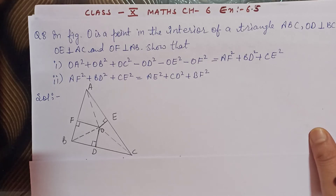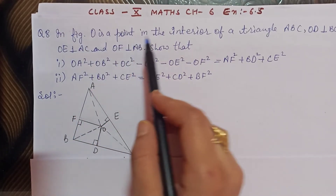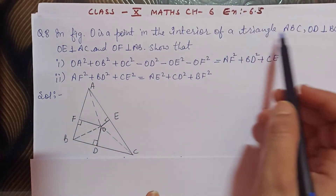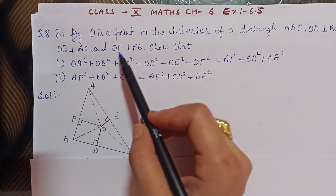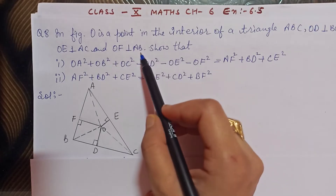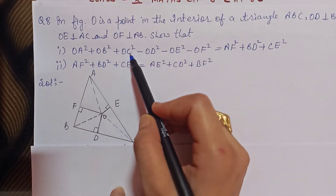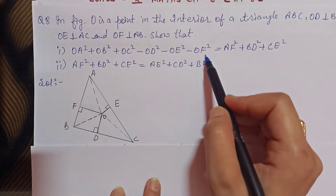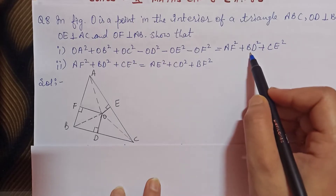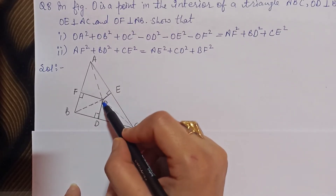Hello students, today we start Class 10th, Chapter 6, Exercise 6.5, Question number 8. In the figure, O is a point in the interior of triangle ABC. OD is perpendicular to BC, OE perpendicular to AC, OF perpendicular to AB. Show that OA² + OB² + OC² − OD² − OE² − OF² = AF² + BD² + CE².